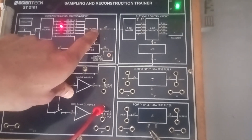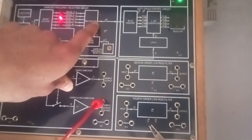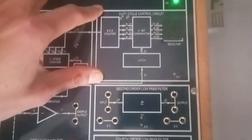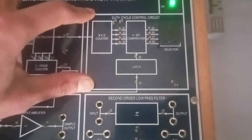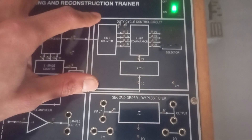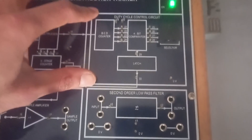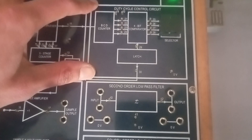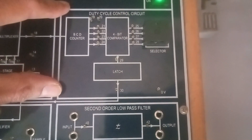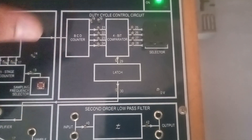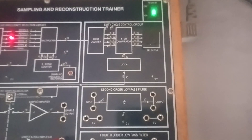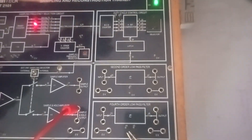The output of this sampling frequency selector goes to the duty cycle control circuit. This circuit does not change the frequency but changes the duty cycle. Duty cycle is defined as T-on divided by total time period, or T-on divided by T-on plus T-off. In this experiment we choose a duty cycle of 50%, meaning T-on is 50% and T-off is 50% — a symmetrical pulse.